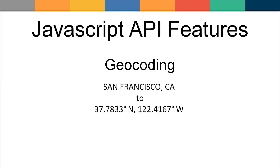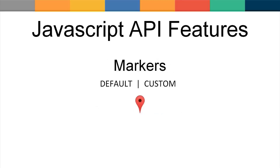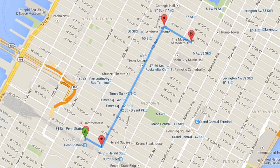Geocoding is an API feature that allows you to convert an address into latitude and longitude coordinates for display on the map. There is also a reverse geocoding feature where you can take a coordinate and convert it back into an address. Positioning of markers, shapes, and overlays on the map is done using latitude and longitude coordinates. So if you have a business address where you want to display a marker, you will need to geocode that address to get the coordinates. The geocoding process only needs to take place one time, and then you can reference the associated coordinates going forward.